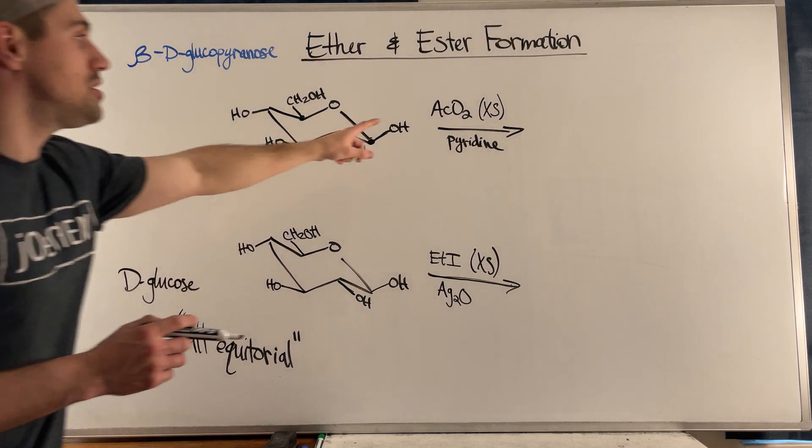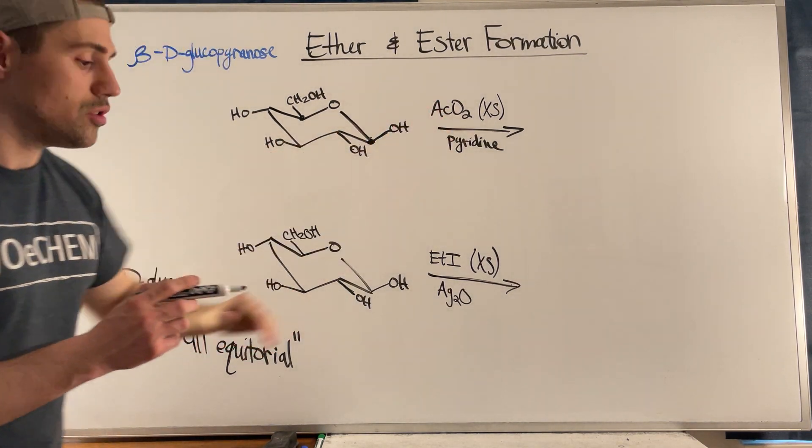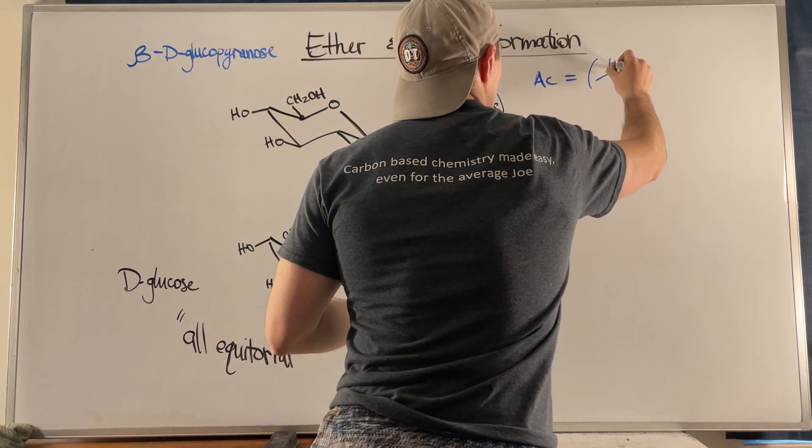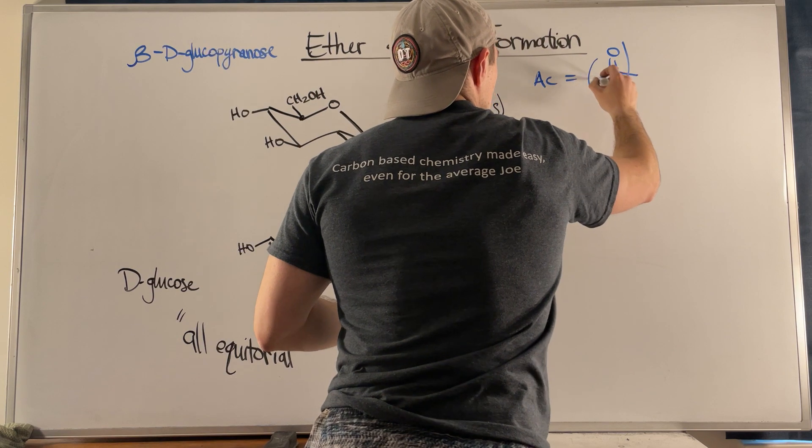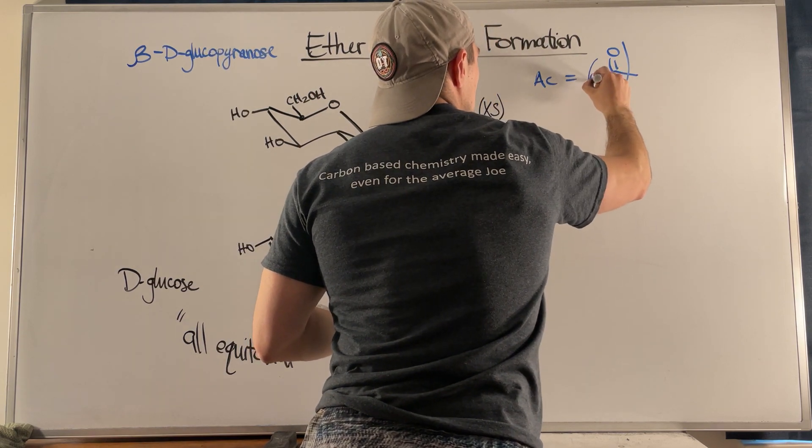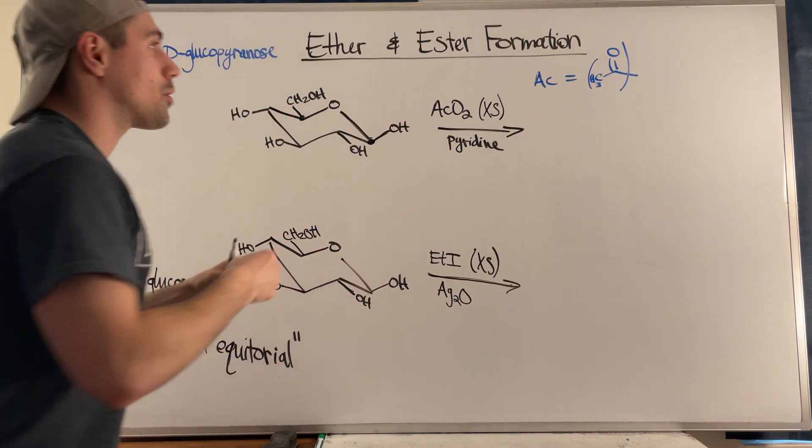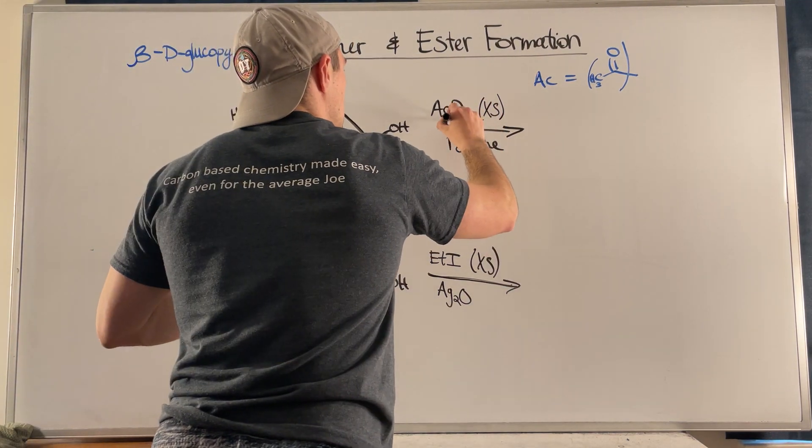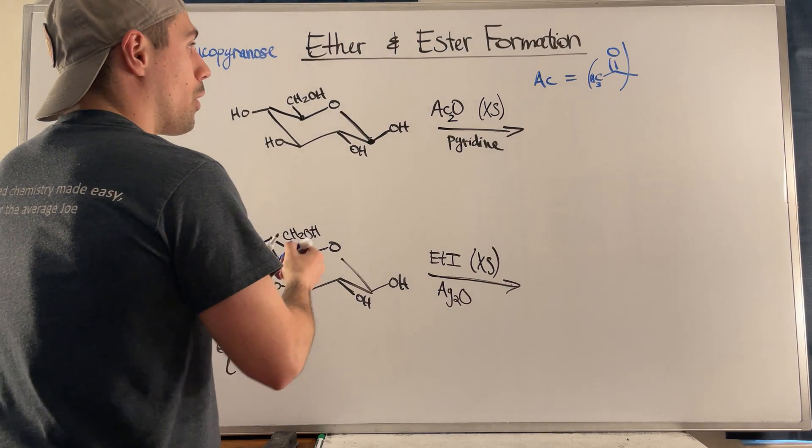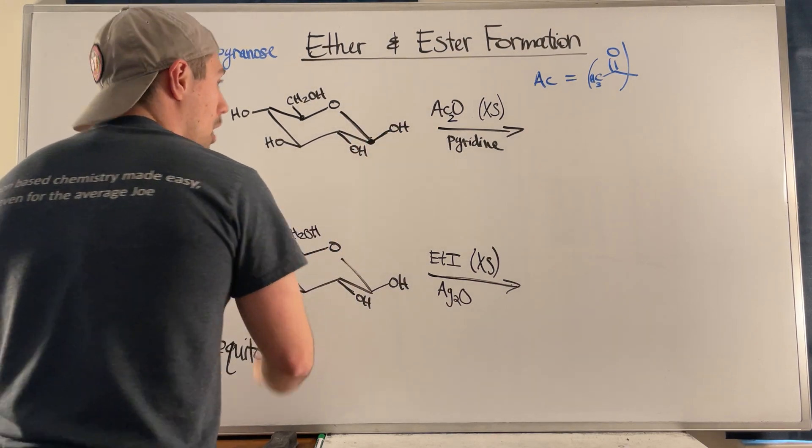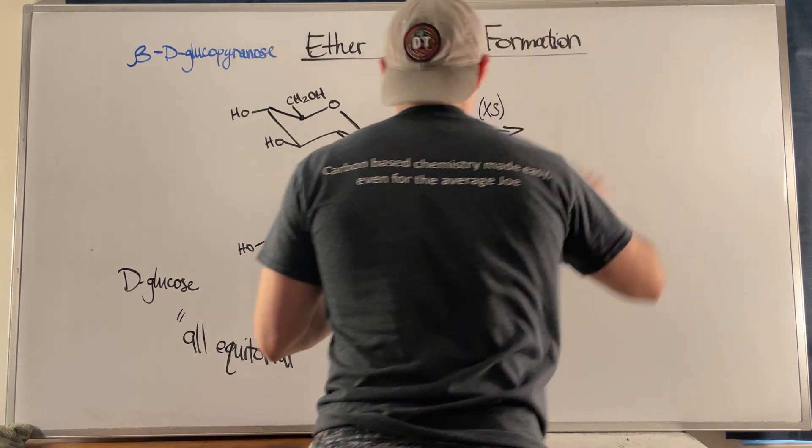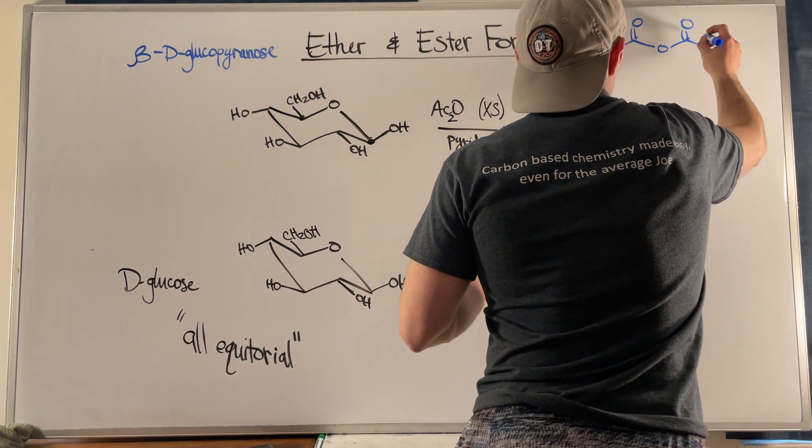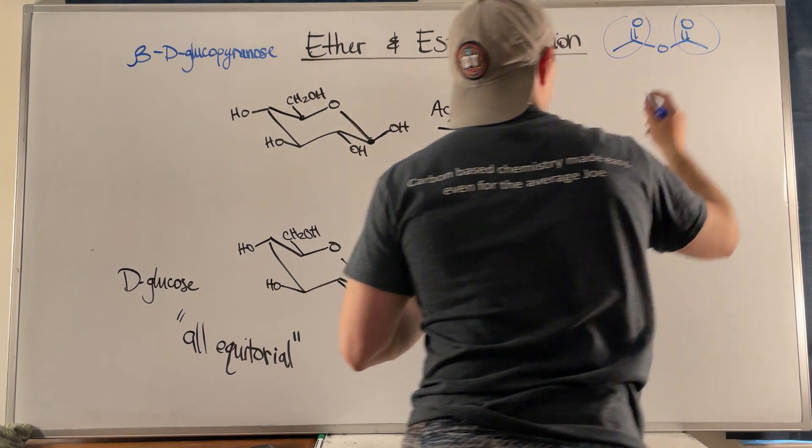So when you see this AC2O what I really want you to think - remember AC just kind of equals this, this being a CH3 right here. You just have two carbons, a carbonyl, and then whatever it's attached to. So the AC2O is really just an acid anhydride. It looks like this because you have two of these and just the oxygen that connects them.